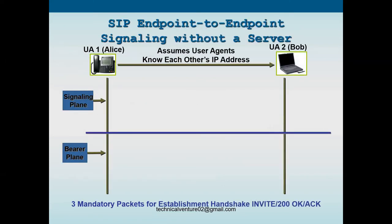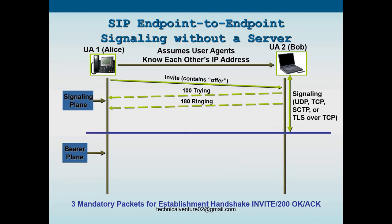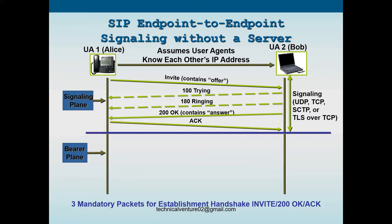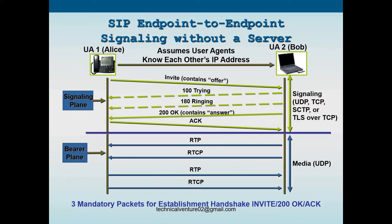This is the normal SIP call flow from one user agent to another — Alice and Bob. When user agent one sends an INVITE to user agent two, it contains an offer (early offer). It gets back 100 Trying and 180 Ringing, then 200 OK which contains the answer after negotiation. Then the acknowledgement is sent and RTP is established.